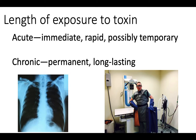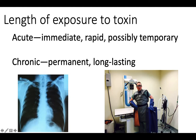How long you are exposed to a toxin will also alter its impact. Acute exposure is short-term, immediate, possibly one-time exposure to a toxin. Chronic exposure is long-term, repeated, or permanent exposure. A good example: when you get an x-ray, the technician puts on protective gear and stands behind a wall. You are only exposed to x-rays for a very short time—acute exposure—whereas the x-ray technician is exposed all day long, many times over, which is why they need so much protective gear.